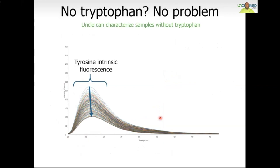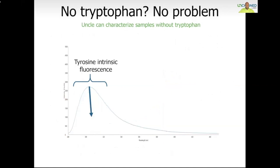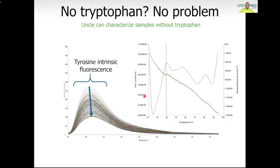What about the extreme case of samples which do not contain any tryptophan at all? Here we're viewing the overlay of the spectra of samples which essentially only contain tyrosine — a very small 6 kDa protein whose sequence indicated the only aromatic amino acid present was tyrosine. As we can see, the maximum emission is nowhere near 330 or 350 nm, but rather close to 305 nm. The area method can be used to characterize this sample, and the TM is easily computed with multiple inflection points generated. UNCLE is exceptionally flexible, making that sample no challenge for the user to characterize.